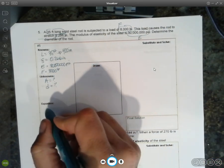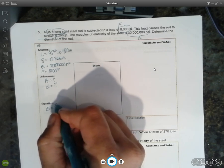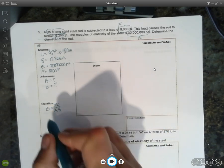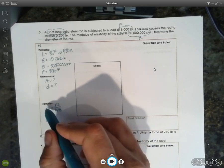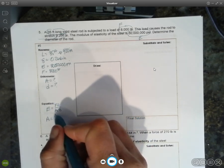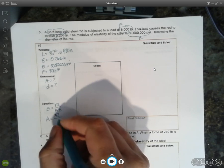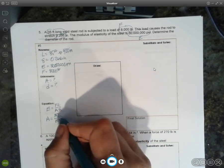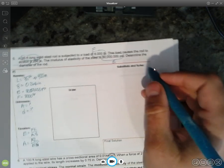All right. Our equation for elasticity is FL over A times the delta. So solving that for area, it would read multiply by A divided by E, it would read FL over E times the delta. All right. So let's go ahead and plug in and solve that.